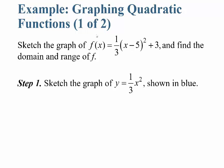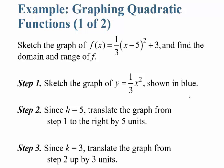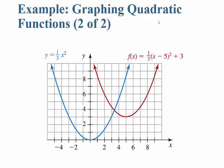Start by sketching the graph of just 1 third x squared — that's shown in blue. The h inside is 5, so move the graph to the right 5 units. Then since k is 3, translate the graph up 3. Sketching 1 third x squared, moving it over 5 and up 3, gives a vertex at h, k — which is (5, 3).